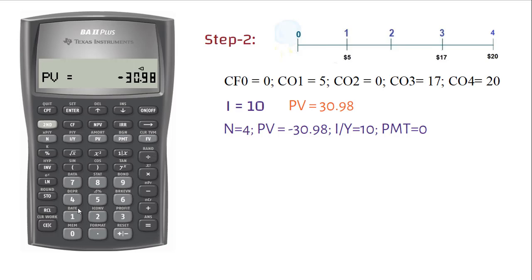Enter I over Y equals 10. Enter payment equals 0. Now, press Compute and FV. Store 45.355 by pressing store N3. We are almost done.